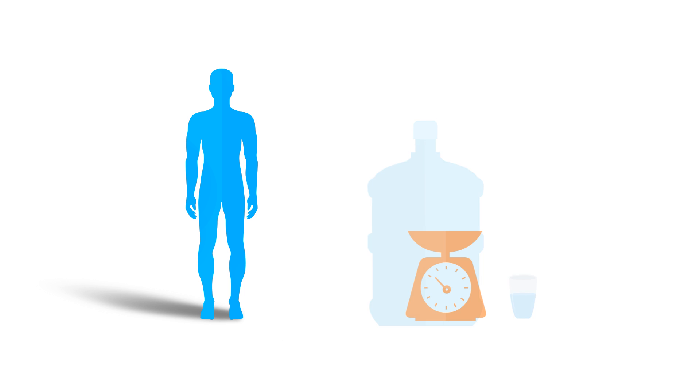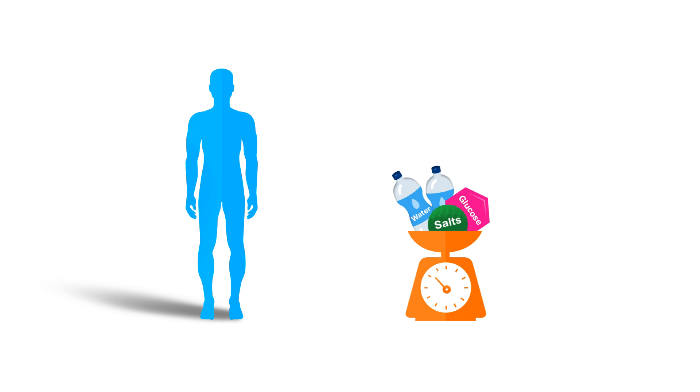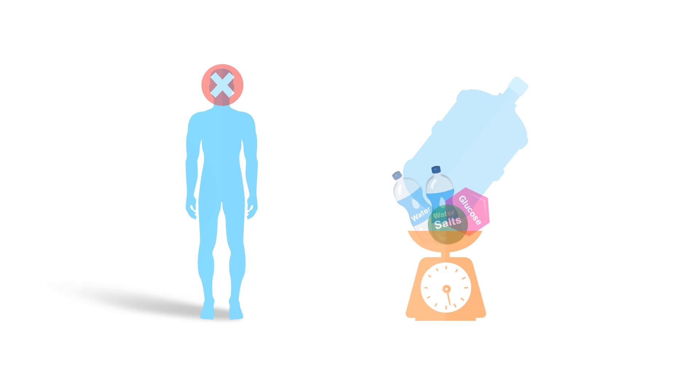The human body requires a certain amount of water, glucose, salts, etc. Anything beyond the required level is dangerous to our body — in some cases, it can be fatal. Just like your mom who fixed your hot chocolate, a mechanism called homeostasis makes sure everything inside our body stays at the normal rate. If there is too much of something, our body gets rid of it. If there is too little of something, our body will produce it.